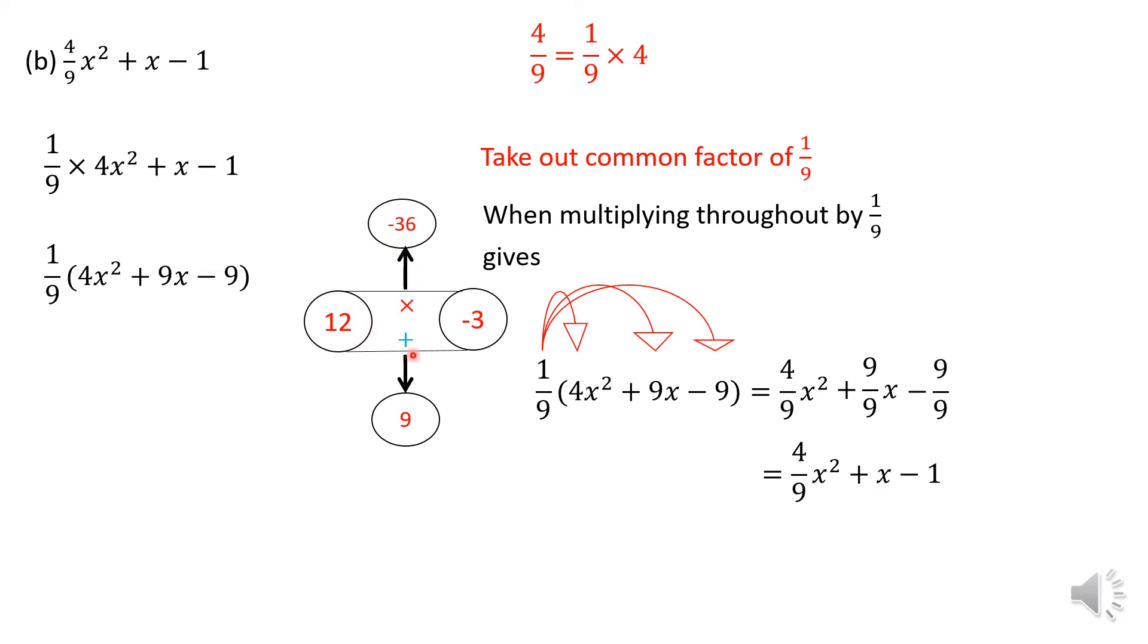So when you say 12 times negative 3 you get negative 36. And 12 plus negative 3 more will give you 9. So I can split my 9x term then with 12x minus 3x. Again it doesn't matter which one you write first.